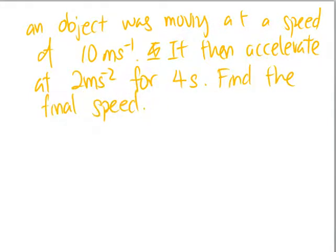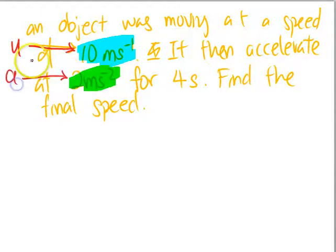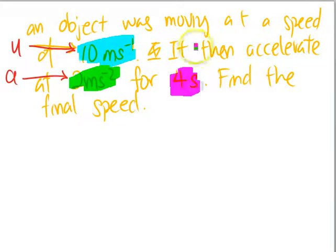So how do we go about doing the questions? Let's underline all the keywords here. We'll say it was moving at a speed of 10 meters per second, so this must be the initial speed, the U. Then they say it then accelerate at 2 meters per second square. Another give away. This one, it must be the A, acceleration. How long did the time take? We got 4 seconds over here. It is the T.